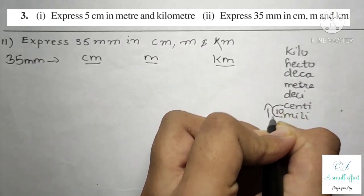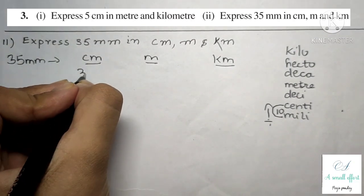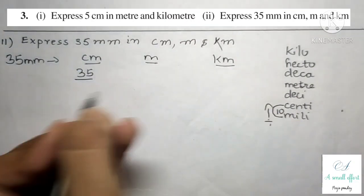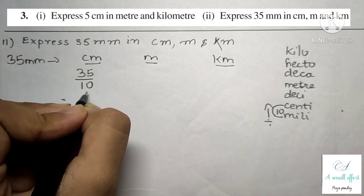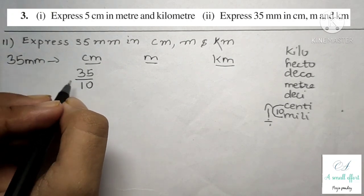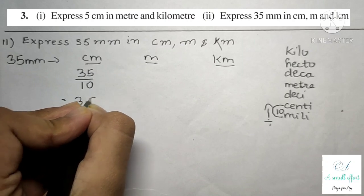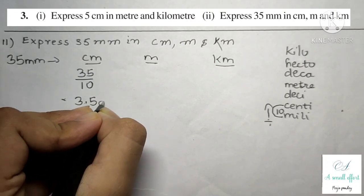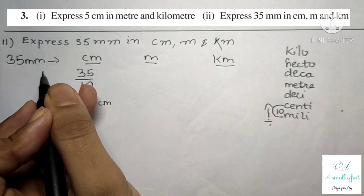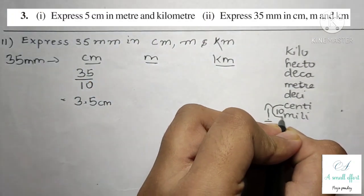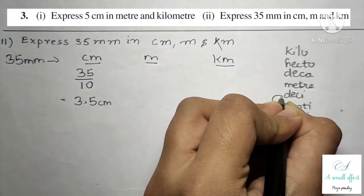As we are going up we divide, so 35 divided by 10. There is one zero in ten, so the decimal point will be one digit from the last. That gives us 3.5 centimeter.